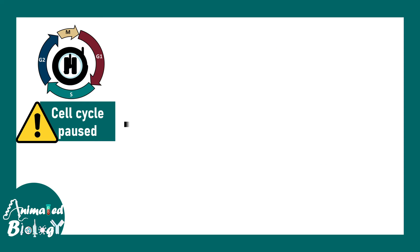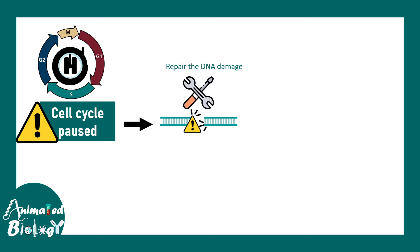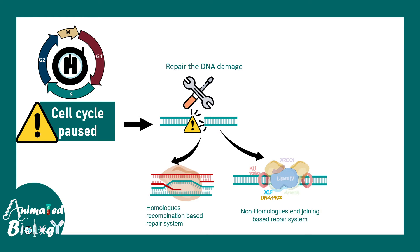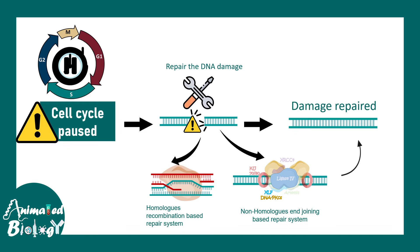Once the cell cycle is paused, what really happens? Sometimes, pausing the cell cycle is necessary to repair the DNA damage — that is the first and foremost thing the cell would try. The cell would engage homologous recombination-based repair or non-homologous end-joining (NHEJ) to repair this kind of double-stranded DNA break. If the DNA is successfully repaired, that is a very good sign and the cell cycle can resume again.